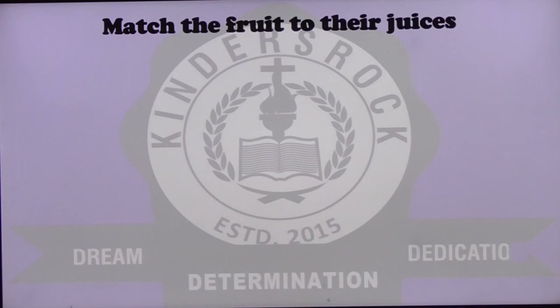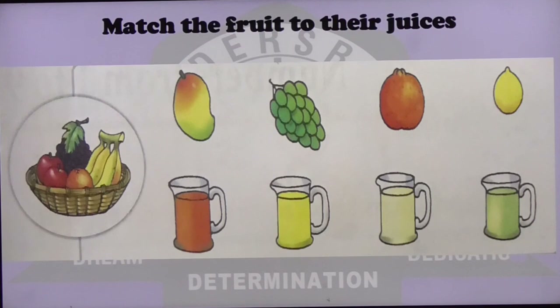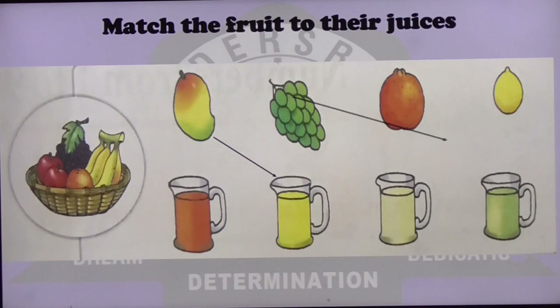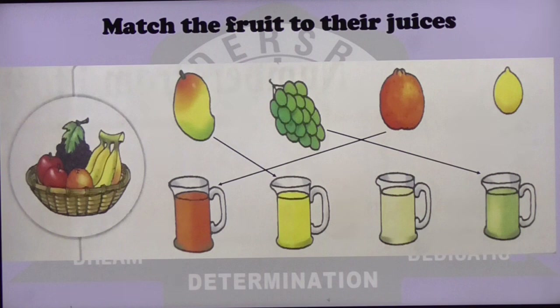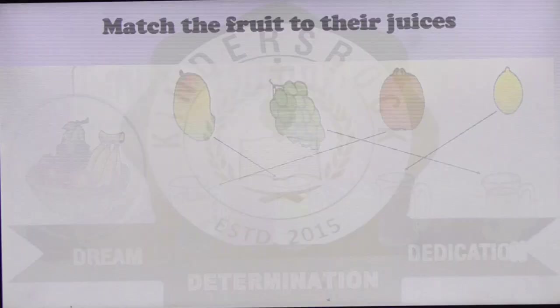Now let us match the fruits to their juices. There we have the picture of a basket full of fruits — mango, grapes, pomegranate and lemon. You have to match each fruit with its juice. That's the mango juice. That's the grape juice. That's the pomegranate juice. And that's the lemon juice.